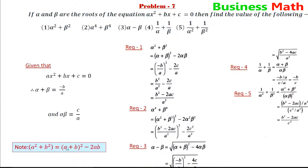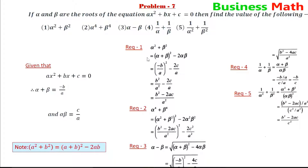plus beta square, minus 2 alpha beta. Alpha plus beta square equals b, alpha plus beta square equals b minus b by e. l squared minus 2 alpha beta, 2 l equals alpha beta equals c by e.